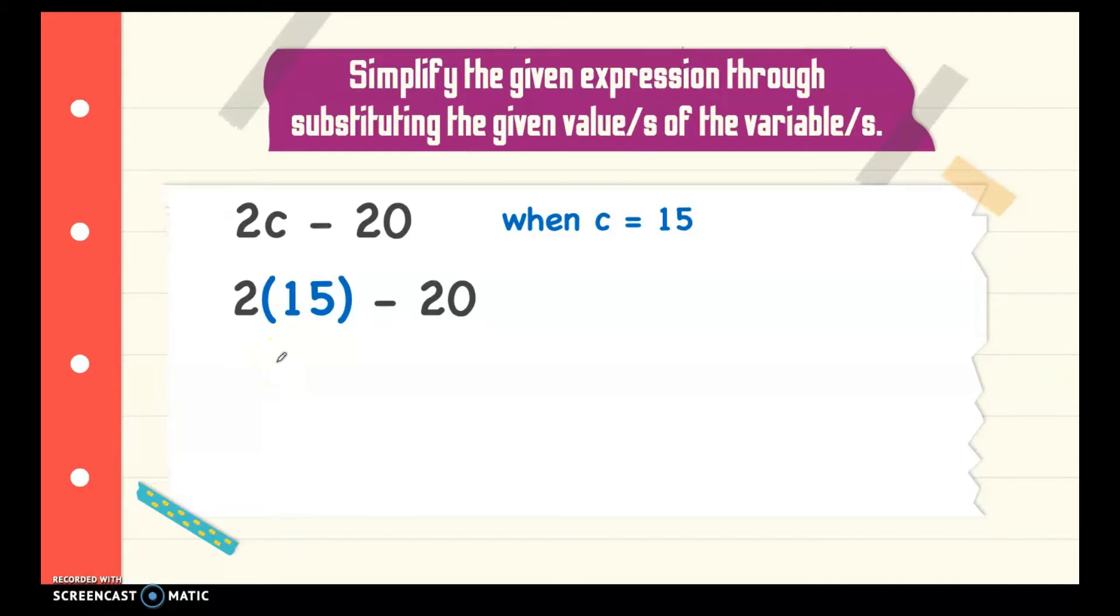Following the order of operation, we have multiplication first, 15 times 2. That is 30 minus 20. We have 30 minus 20. The answer is 10. Again, we always follow the order of operations.